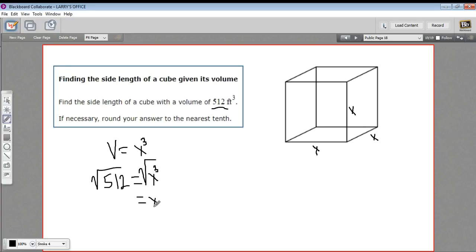So in this case the side length is 8 and the units are feet. So an 8 foot cube has a volume of 512 cubic feet. That is how to find the side length of a cube when you're given its volume.